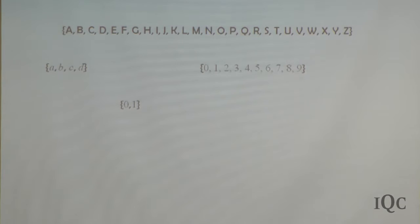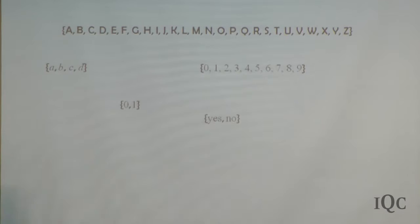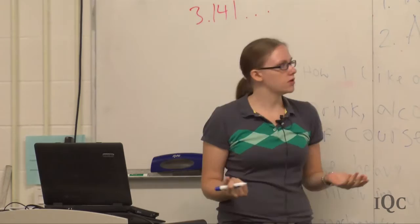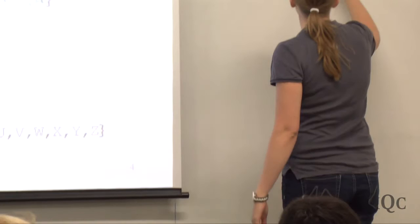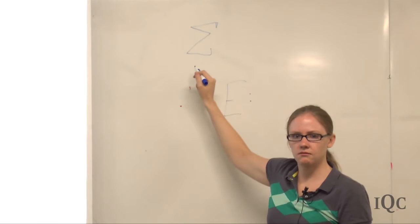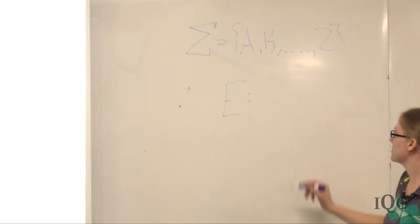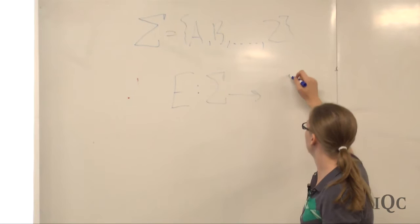This could be your alphabet — you could have an alphabet of just zero and one, or yes and no. In that alphabet, yes is a single symbol, not individual letters. Any finite set of symbols could be an alphabet. For the Caesar cipher, we have the encoding function, usually denoted E, and we often use capital sigma to represent an alphabet — in this case the 26-letter alphabet.